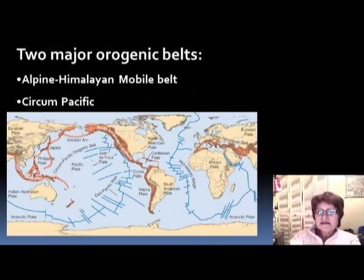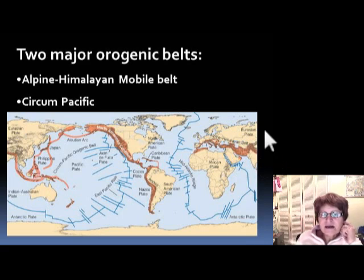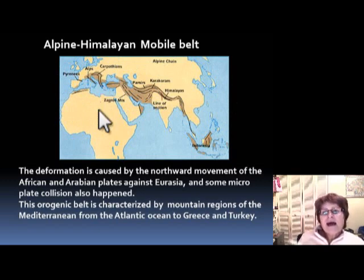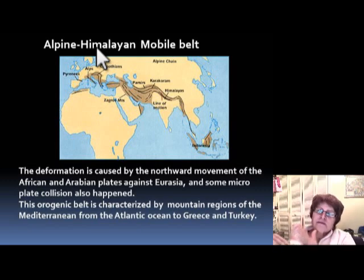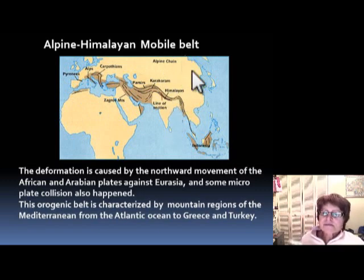Now we have to talk about the orogenic belts. There are two major ones: the Alpine-Himalayan and the circum-Pacific. The Alpine-Himalayan belt runs between Africa, Europe, and India. The reason for this belt is the closing of the Mesozoic Tethys Ocean — Africa and Europe are colliding, forming the Alpine mountains. The Alps extend not only through Europe but also into North Africa. The Himalaya formed mostly because of India colliding with Asia. This whole belt is characterized by very tall, sharp, young mountains with a lot of sedimentation.